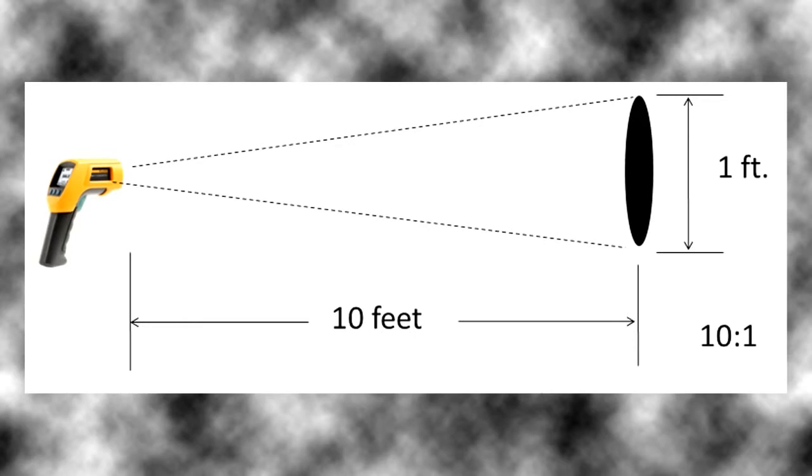The D to S ratio is the ratio of the distance from the IR tool that you're using to the surface that you're measuring.